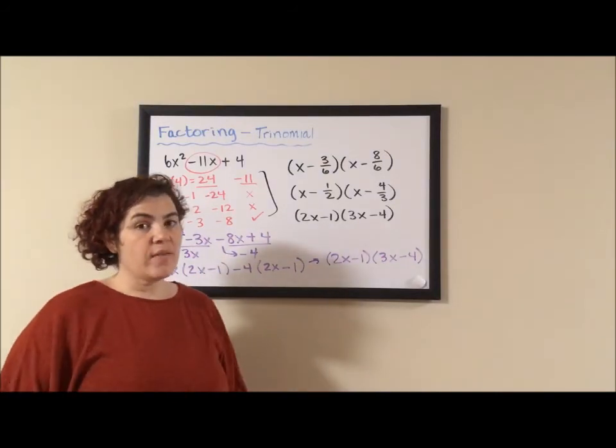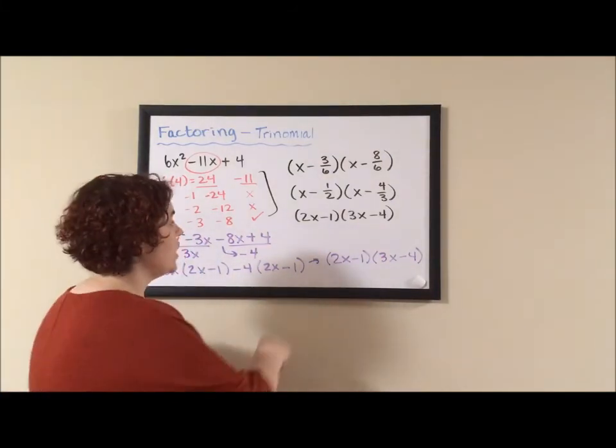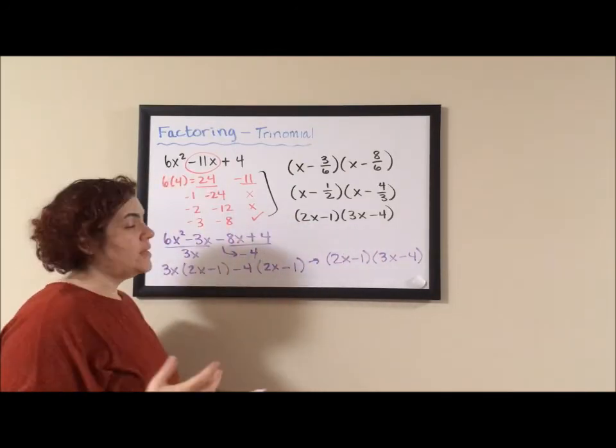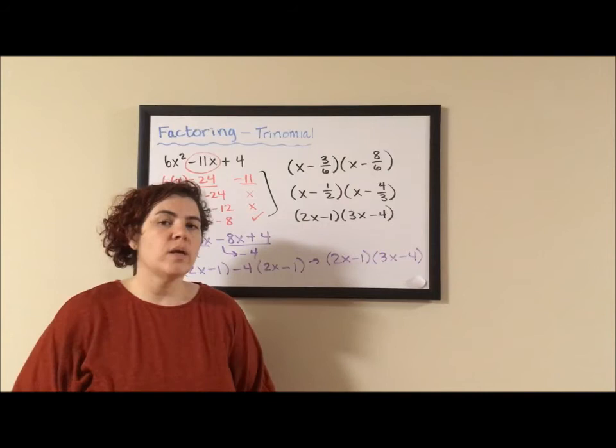Same answer, but you have to deal with fractions. Double check, 2x, 3x, that would be 6x squared. So I didn't lose a greatest common factor by using the fractions.